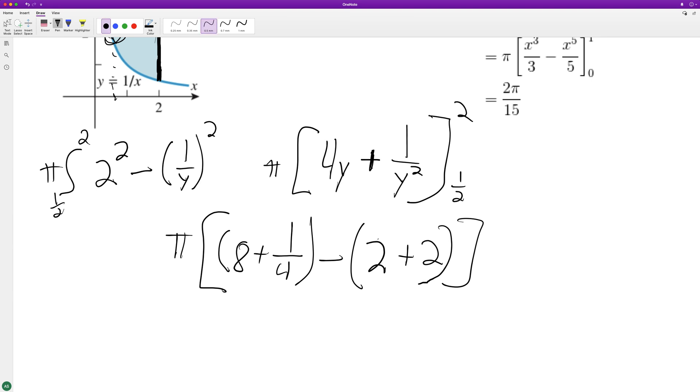So this is 8.5 minus four, gives us 4.5 times pi, or nine over two pi. And that's it. All righty, I hope this helped you out. I appreciate you watching. Have a great day.